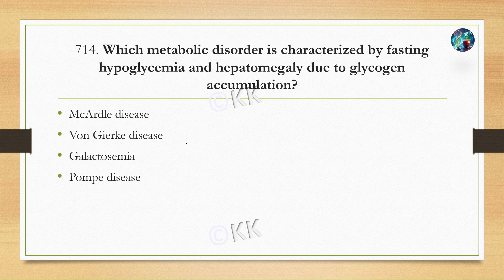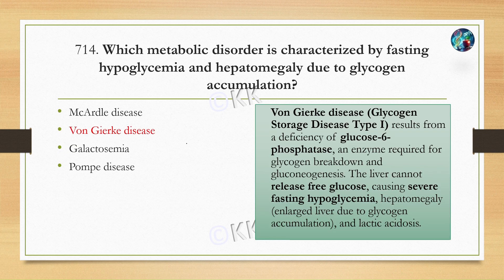Next question: which metabolic disorder is characterized by fasting hypoglycemia and hepatomegaly due to glycogen accumulation? Option A: McArdle disease. Option B: Von Gierke disease. Option C: galactosemia. Option D: Pompe disease. The correct answer is Option B: Von Gierke disease, a glycogen storage disease type 1.